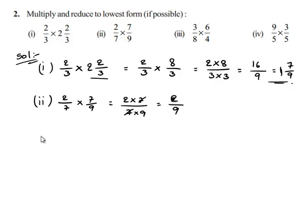Take down the third bit, that is 3 upon 8 multiplied by 6 upon 4. This is equal to 3 multiplied by 6 upon 8 multiplied by 4. This is equal to 3 times 6 is 18 upon 8 times 4 is 32.